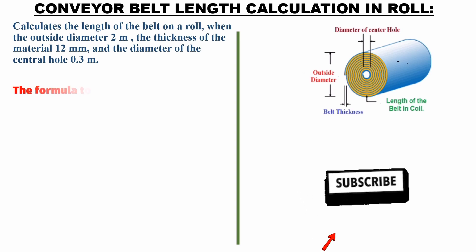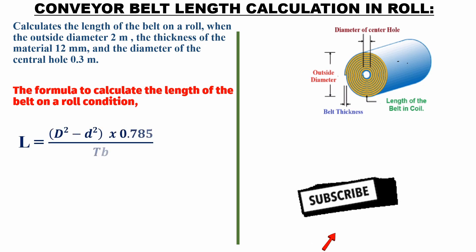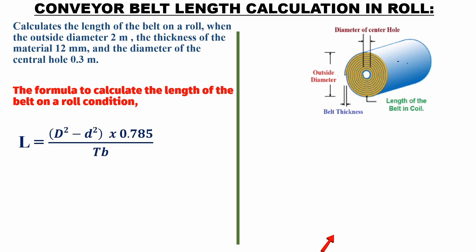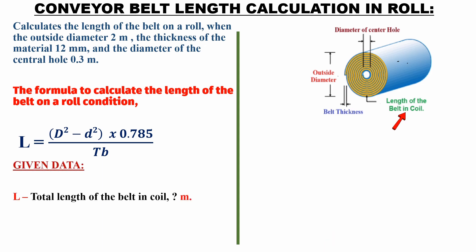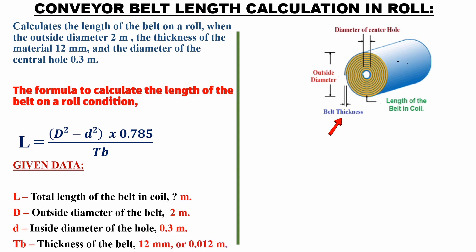The formula to calculate the length of the belt on a roll condition: L is equal to the square of capital D minus the square of small d, multiplied by 0.785, and then divided by Tb. Given data: L is the total length of the belt in coil in meters, to be calculated. Capital D, outside diameter of the belt, is 2 meters. Small d, inside diameter of the hole, is 0.3 meters. Tb, thickness of the belt, is 12 millimeters or 0.012 meters.